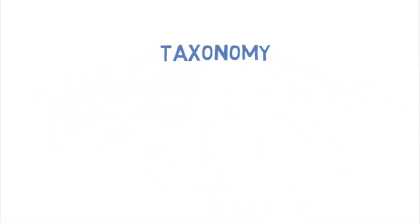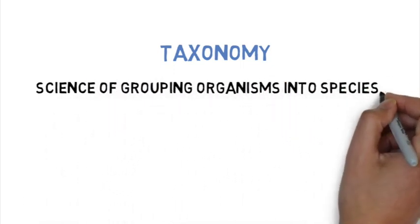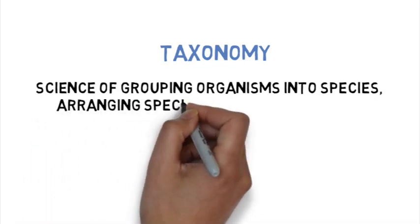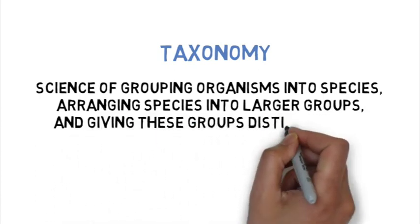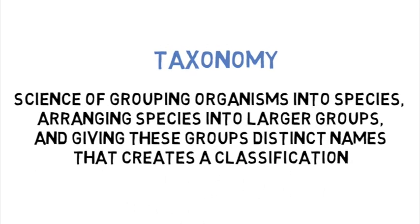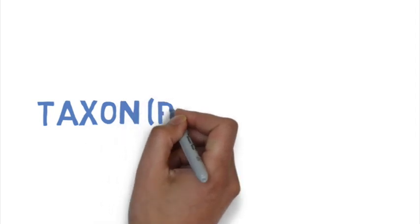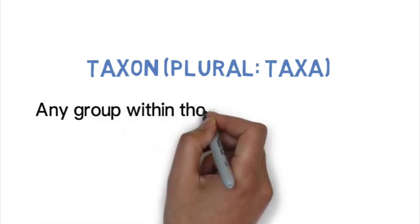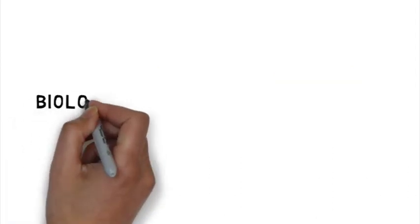Taxonomy is essentially the way that biologists classify organisms. There are so many different organisms on this planet, and the way we classify and group them is through taxonomy. This is done by taking organisms that are similar and putting them into the same species, then arranging these species into larger groups with distinct names that create a classification system. The root word of taxonomy is taxon, and taxon is any group within this classification system.